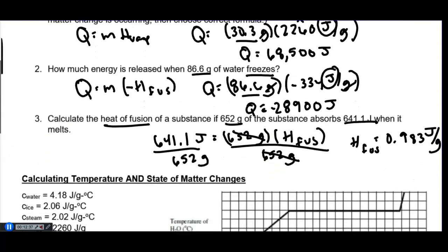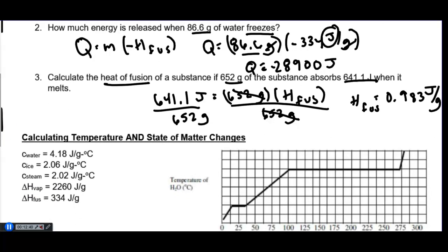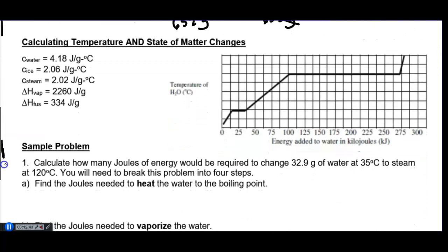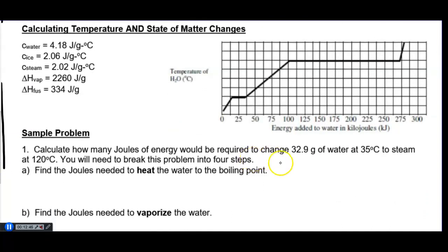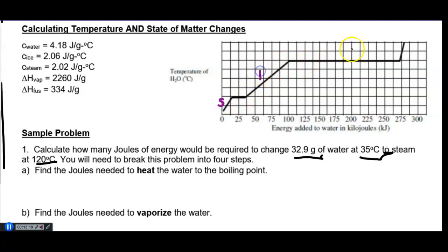Those are basic problems with one equation and one phase change, but in real life matter changing states probably has to cool down or heat up, or go through multiple steps. We're going to learn how to do a multi-step problem. For example: how many joules are required to change 32.9 grams of water starting at 35°C to 120°C? Draw a phase change graph nearby, label solid, liquid, gas. Water freezes at 0°C and boils at 100°C.